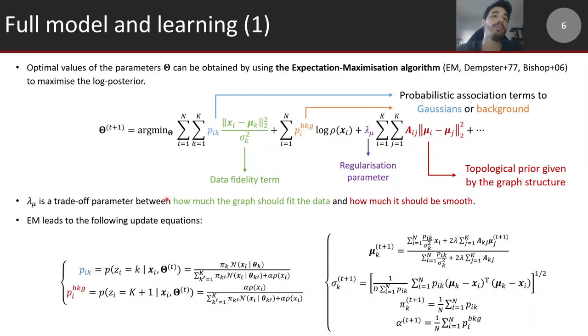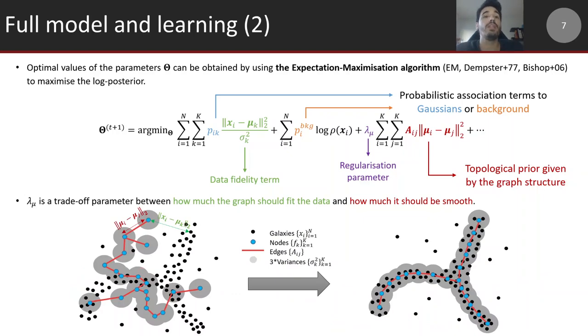Expectation maximization algorithm with the previously introduced prior distributions leads to analytical update equations which is convenient, so you can update iteratively and converge to some local maximum of the log posterior for the parameters. The full idea of the optimization scheme is: you start with a graph with some nodes that are Gaussian clusters and you want these clusters to pave the galaxy distribution, the point cloud distribution more generally, but keeping some idea of smoothness with some robustness to outliers introduced by the uniform background component.